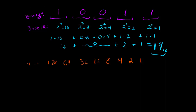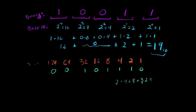For example, take the binary number 00101110. Reading from right to left: no 1 at the ones place, so nothing; there's a 1 at the 2s place, add 2; a 1 at the 4s place, add 4; a 1 at the 8s place, add 8; a 0 at the 16s place, skip; a 1 at the 32s place, add 32; a 0 at the 64s place, skip; a 0 at the 128s place, skip. So the result is 32 + 8 + 4 + 2 = 46 in base 10. Binary 101110 equals 46.